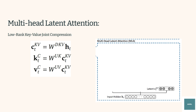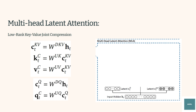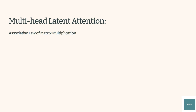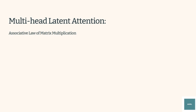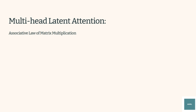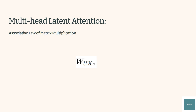Low-rank compression can also be applied to queries to further reduce memory usage and computation. Additionally, the associative law of matrix multiplication states that when multiplying three matrices, their grouping does not change the result. Therefore, matrices like WUK can be merged into WQ, and WUV can be merged into WO. Instead of explicitly computing the full-sized K and V, we can merge their transformations into WQ and WO to further reduce computation overhead during inference.